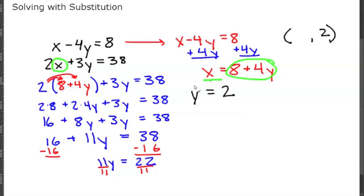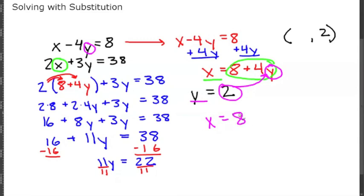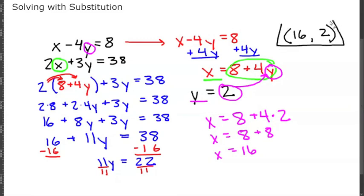Now that we know y equals 2, we plug it into the simplified first equation: x equals 8 plus 4 times 2, which is 8. So x equals 16. Our final solution is the ordered pair (16, 2).